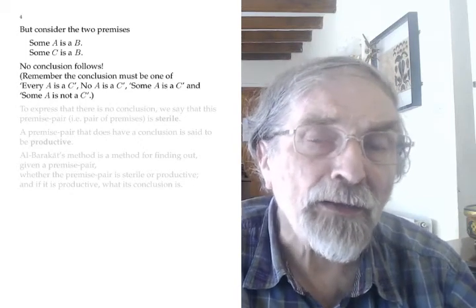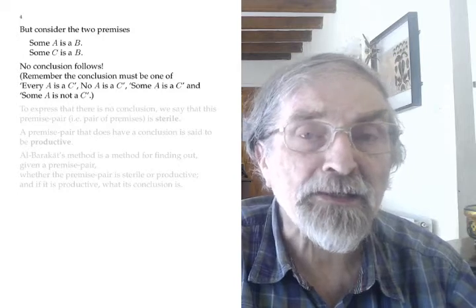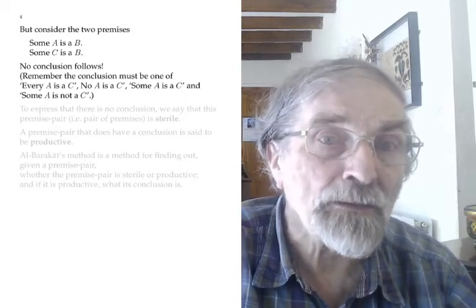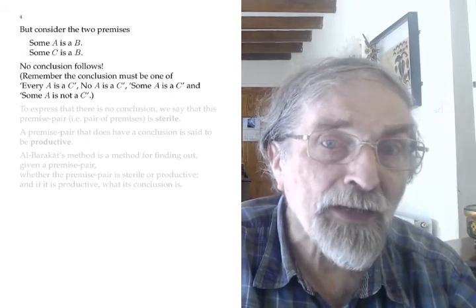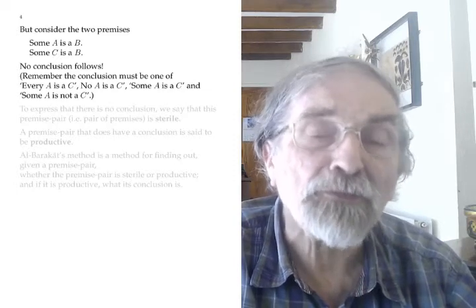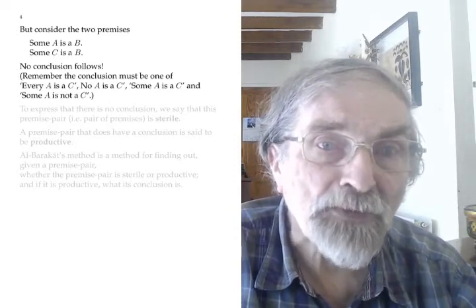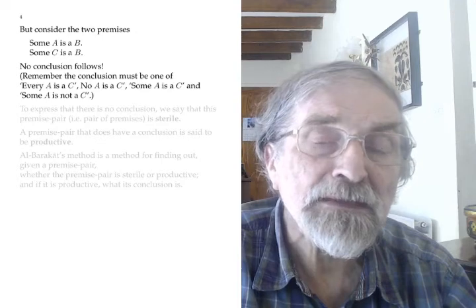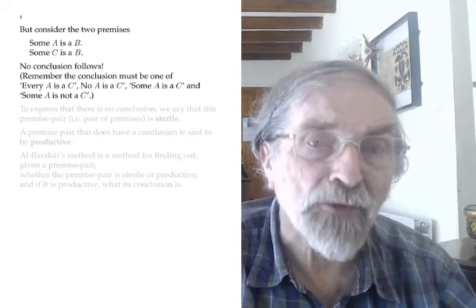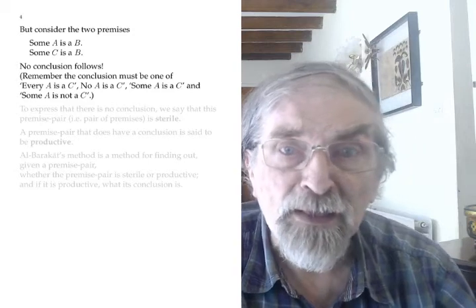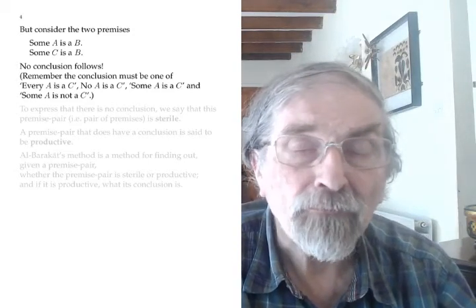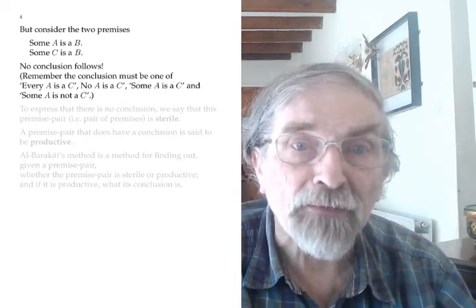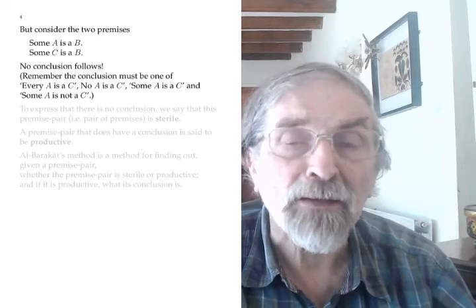Now if you write down a premise pair where the first sentence has the letters A and B in some order and the second sentence has the letters B and C in some order, it's not necessarily true that there is a sentence that follows from them both. For example, suppose we write 'Some A is a B' and 'Some C is a B' — does that imply any of the four sentences that have the letter A first and the letter C second? You might like to stare at that and see if you agree that there is no such sentence.